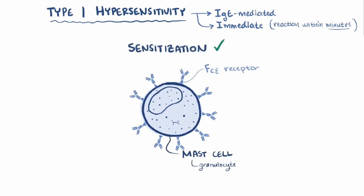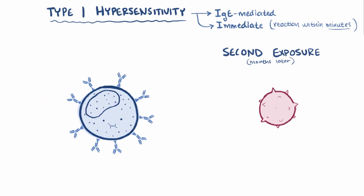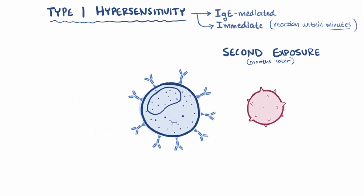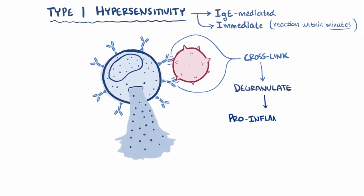Now let's say that same person breathes in some ragweed pollen again, maybe a few months later, a second exposure. Well, the souped up mast cells, using their coat of antibodies, binds to the antigen. Actually, it takes two or more bound antigens to cross-link the IgE antibodies, which signals the mast cell to degranulate and release a bunch of pro-inflammatory molecules called mediators, that ultimately causes the effects seen in an allergic reaction.